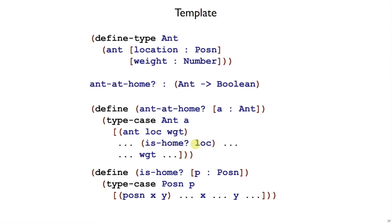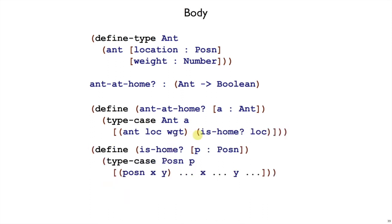Why not just inline the handling of x and y in ant-at-home? Because we want to stay consistent with the choices we made in representation. We deferred location to a separate type posin, so we're going to defer the work on posins to a separate function is-home that works on the posin. For the body step, we can do these independently — we can proceed with ant-at-home by itself assuming we have some is-home function, and then proceed with is-home following the rest of the recipe. For ant-at-home, looking at our examples, we discover we don't need the weight — we just want the is-home part. For is-home, we want to return true if both x and y are zero. The interesting thing here is that our data analysis led us to refer to a different data definition, and at the template step that led us to defer to a different function.